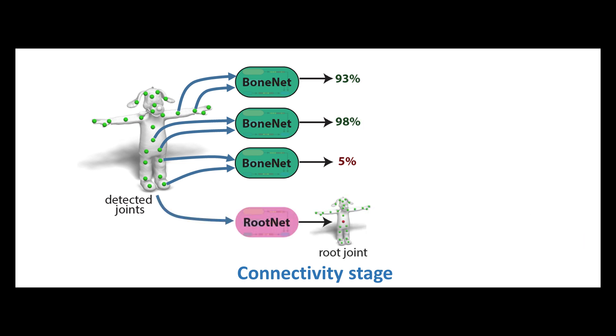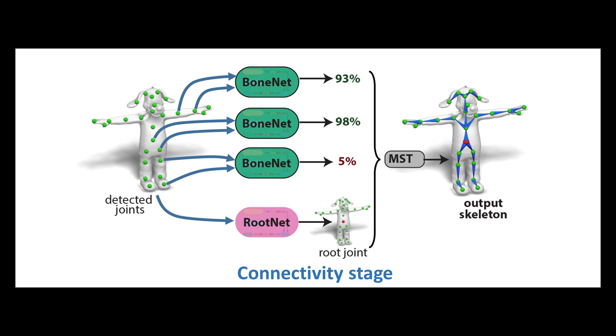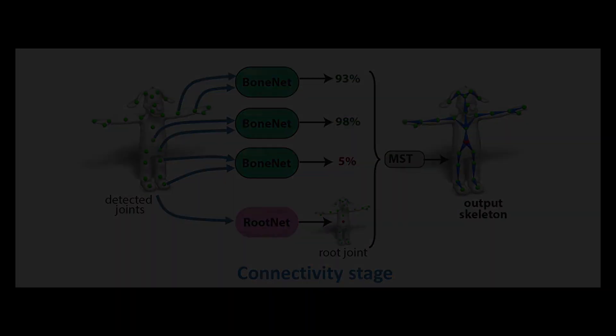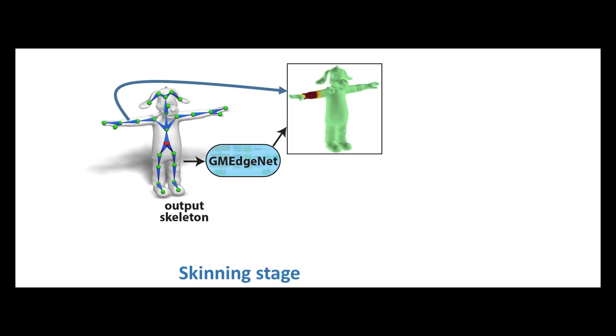The second stage concludes by using another network to classify which joint should be the root. Starting from the root node, a minimum spanning tree is driven by the predicted bone probabilities to extract a full character skeleton from the separate joint pairs.